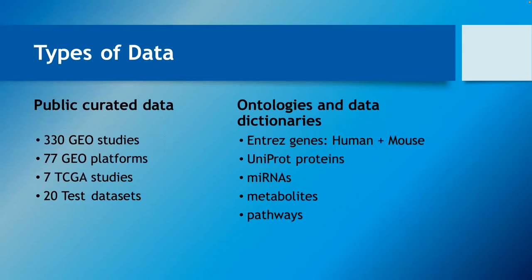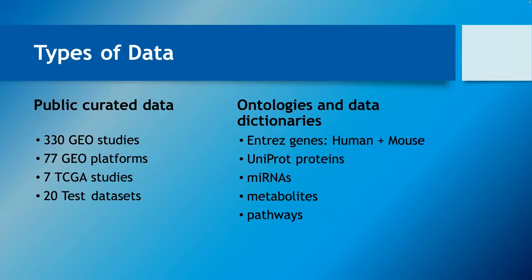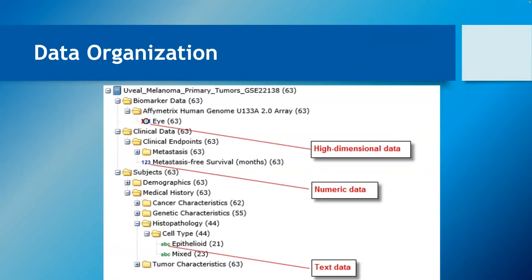We've also spent a lot of time making public data available within TranSMART. Besides bringing in your own proprietary information, we have a lot of datasets from GEO, TCGA, and others. When you open TranSMART you can often find data of interest to get started on, even with a brand new project. We have data dictionaries and ontologies already built in so you can get started relatively efficiently.